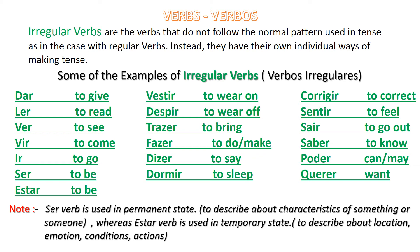Dar – To give. Ler – To read. Ver – To see. Vir – To come. Ir – To go. Ser – To be, it gives a permanent meaning. Estar – To be, it gives a temporary meaning. Vestir – To wear on. Despir – To wear off. Trazer – To bring.